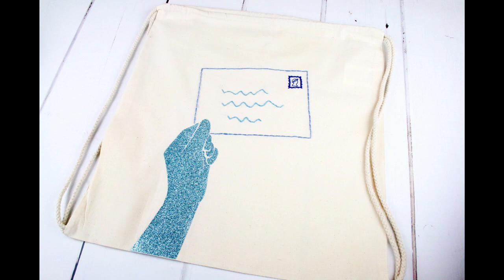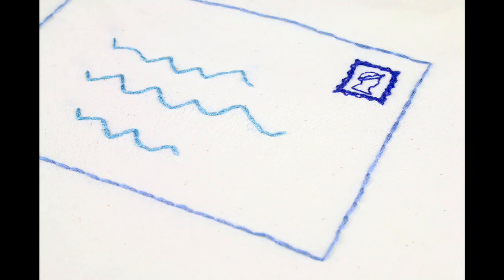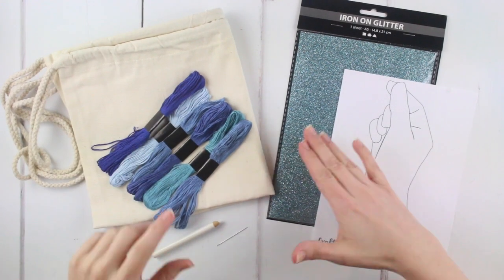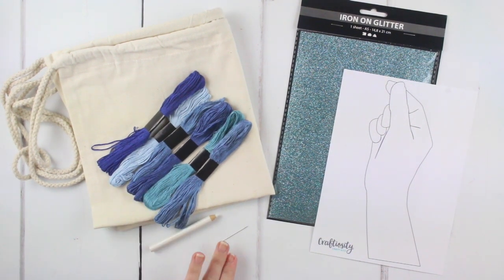We're making a drawstring bag using two different processes. First creating a sparkling blue hand silhouette using iron-on foil, then adding stitch details to create your own sewn envelope. Inside your kit you'll find your drawstring bag, iron-on foil and template, a white pencil, sewing threads and a needle.